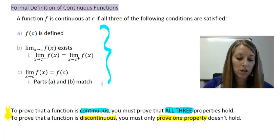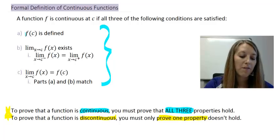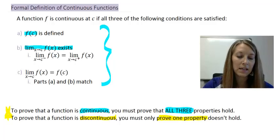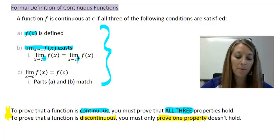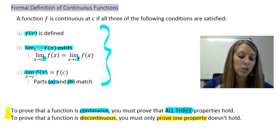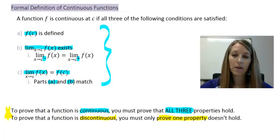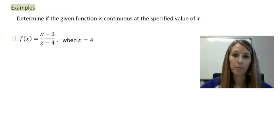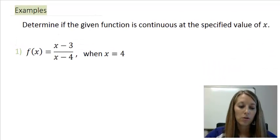To prove something is continuous we have to prove that all three properties hold. The function has to be defined, the limit has to exist — which means we check that the left-hand and right-hand limits match up — and the limit has to match where the function is.